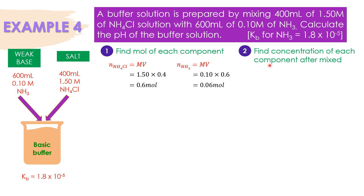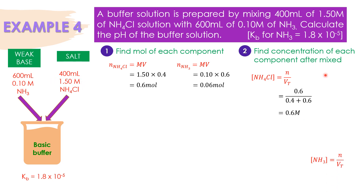Kita nak cari concentration of each component after mix menggunakan formula: number of moles divided by total volume. Untuk mencari concentration NH4Cl after mix, number of moles dia adalah 0.6 moles divided by total volume. Total volume adalah hasil tambah volume weak base dengan volume salt — 600 ml tambah 400 ml, convert into liter. So, concentration NH4Cl adalah 0.6 molar. Untuk NH3, number of moles NH3 adalah 0.06 moles, total volume sama. So, concentration NH3 adalah 0.06 molar.